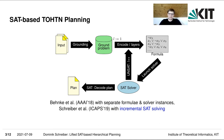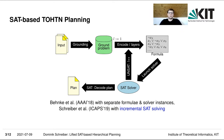If the solver reports unsatisfiability, then we just encode another layer and add it to the formula. This cycle is repeated until the solver reports satisfiability, then we can decode a plan from a satisfying assignment.